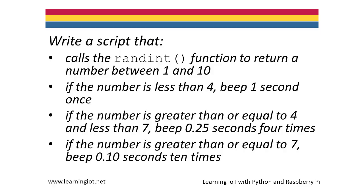We'll next use an if-elif-else statement to determine how a piezo buzzer should beep. We'll use the randint function to generate a random integer between 1 and 10. If the integer is less than 4, the buzzer should beep 1 second once. If the integer is greater than or equal to 4 and less than 7, the buzzer should beep 0.25 seconds 4 times. If the integer is greater than or equal to 7, the buzzer should beep 0.10 seconds 10 times.